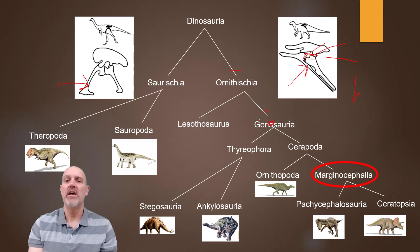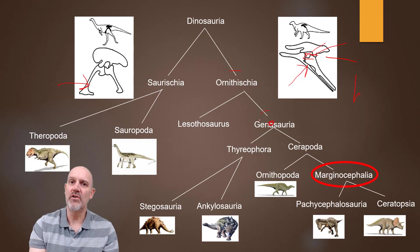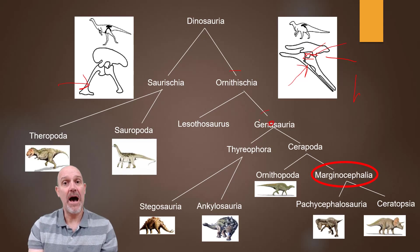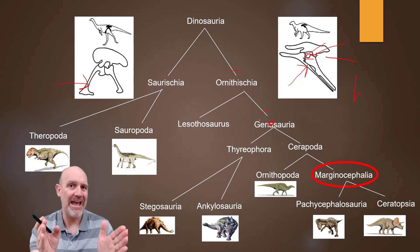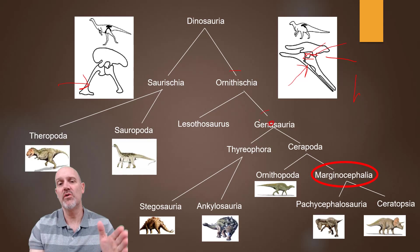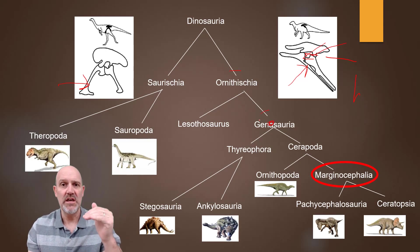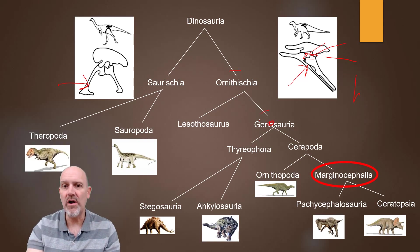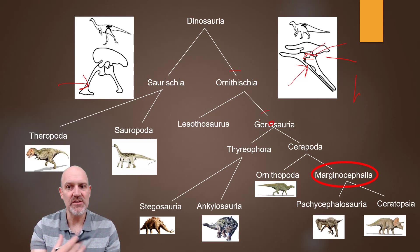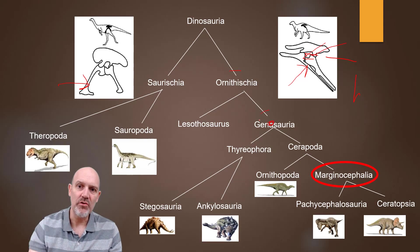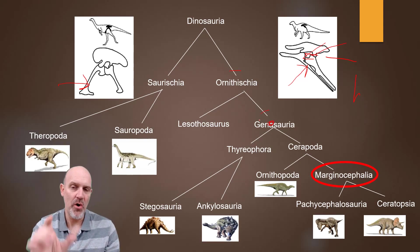We looked at Thyreophora, and the synapomorphy for Thyreophora was armor — rows of armor down the back. Inside Thyreophora we have Stegosauria and Ankylosauria. The synapomorphy for Stegosaurs is the plates, and for Ankylosaurs it's the armor on the head. Now we're going to the other group: Cerapoda, which contains the Ceratopsians.